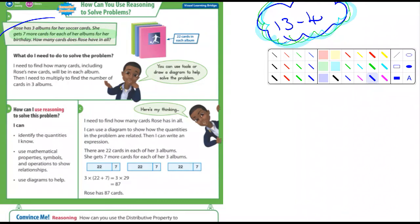So first off, you could look at it like, and they do that right down here, each album has 22 cards and then you're adding seven. And so one of the ways they represented that, you can see it right here, it's 22 plus seven in parentheses and then just multiply that by three. And you can see that she's got 87 cards.